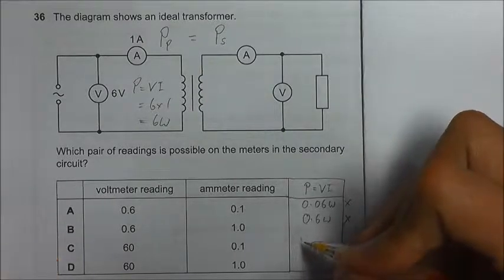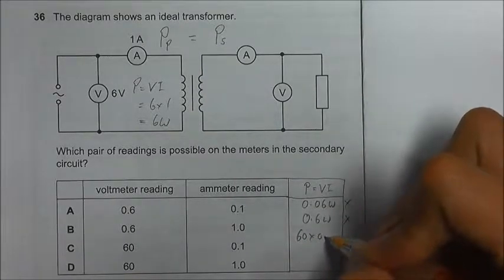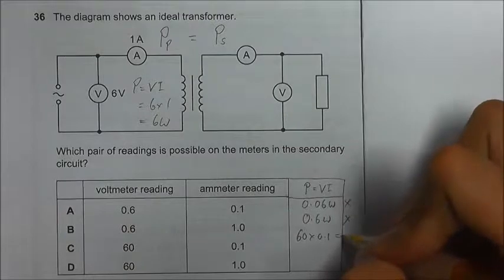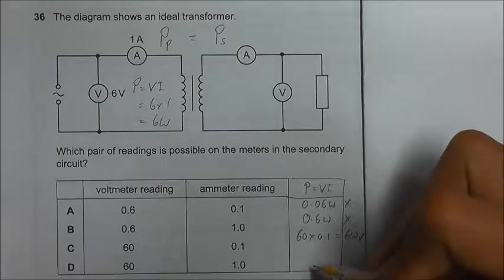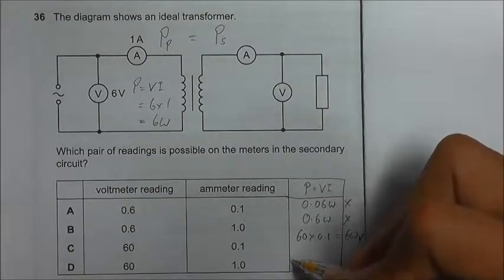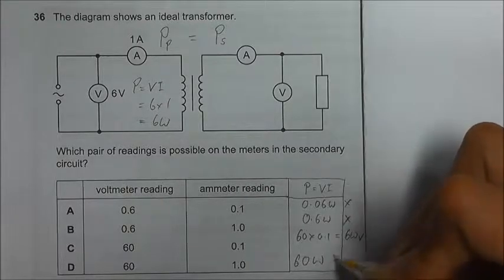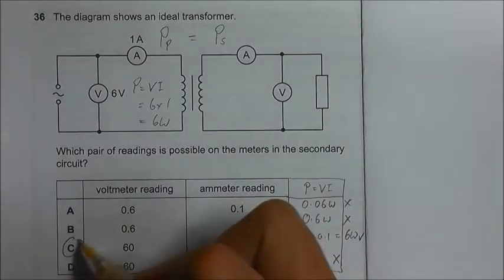Option C, 60 times 0.1, we will get 6 watts, so this is the answer. And option D, 60 times 1, we will get 60 watts, this is also not the answer. So the answer should be C.